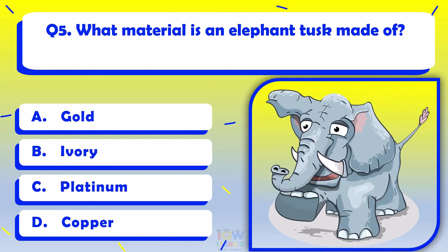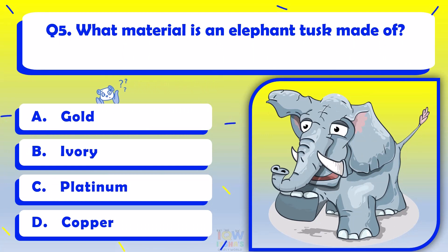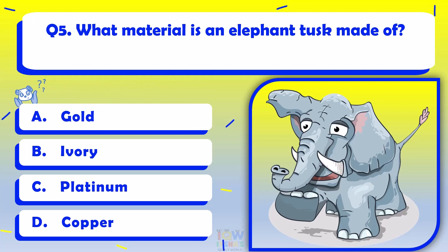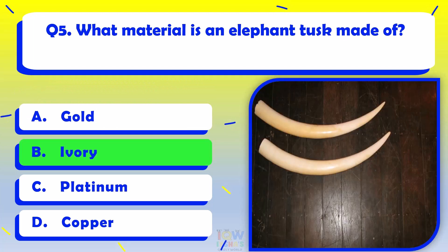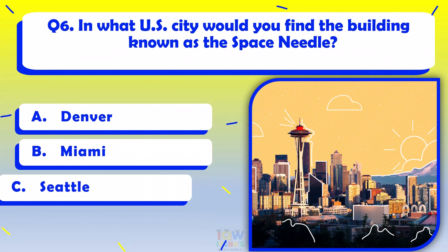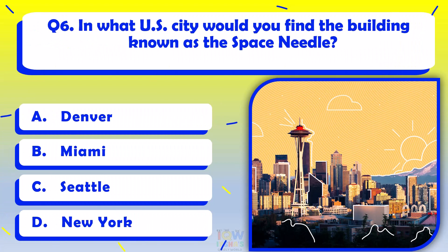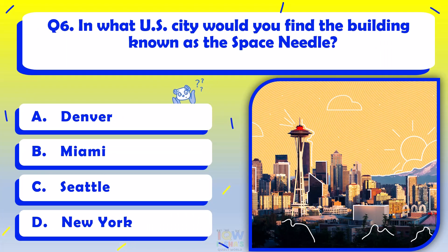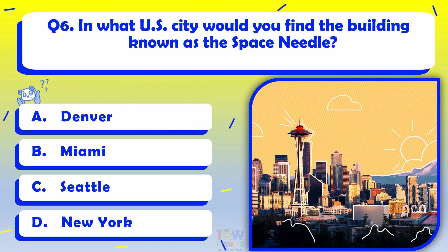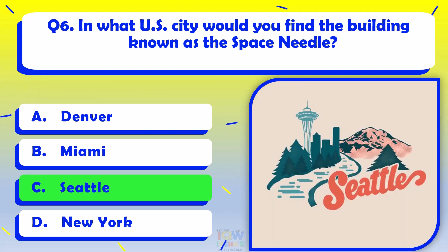What material is an elephant tusk made of? Ivory. In what U.S. city would you find the building known as the Space Needle? Seattle.